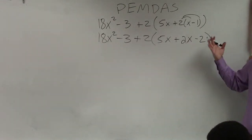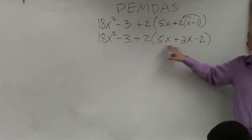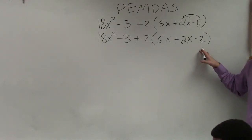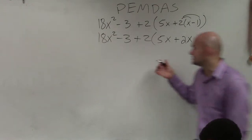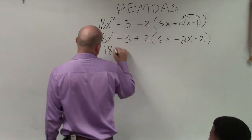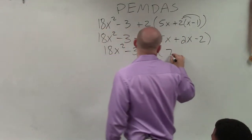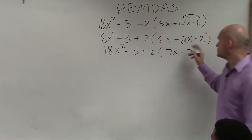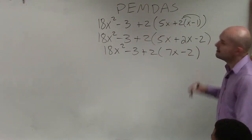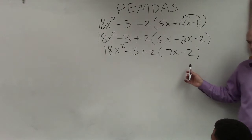Now, inside this parentheses, I'm still on PEMDAS. Can I simplify this by combining like terms? Yeah, 5x and 2x. So let's write the problem again. 5x plus 2x is 7x minus 2. I cannot simplify these any further.